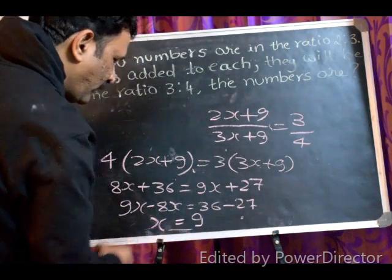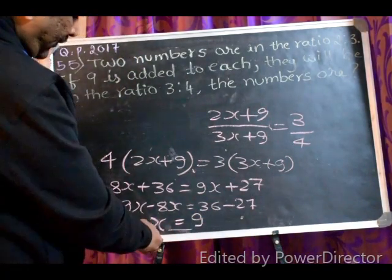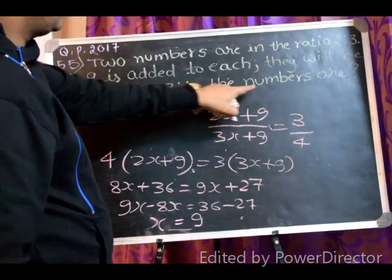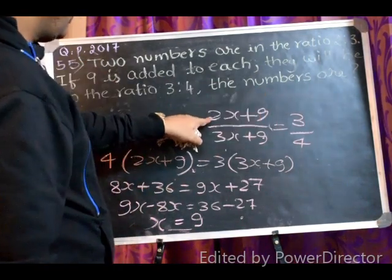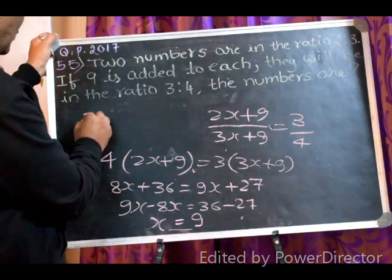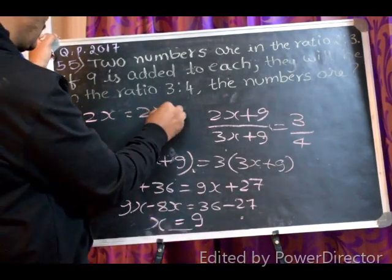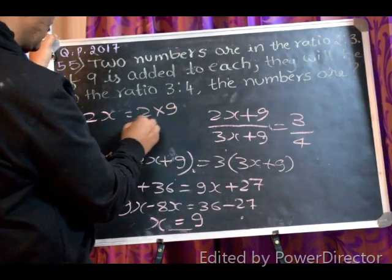So, we find out the value of x. Now, we know x is equal to 9. So, there are two numbers we have to find. We know one number is 2x, with x value 9. 2 into 9 is equal to 18.